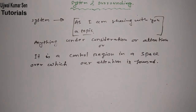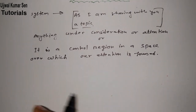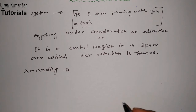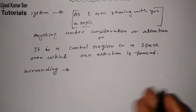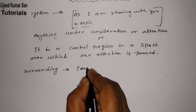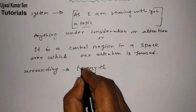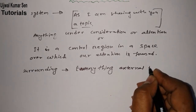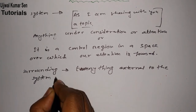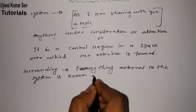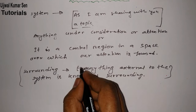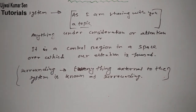Now if we talk about surrounding: in this universe, everything external to the system is known as surrounding. Everything external to the system is known as surrounding.